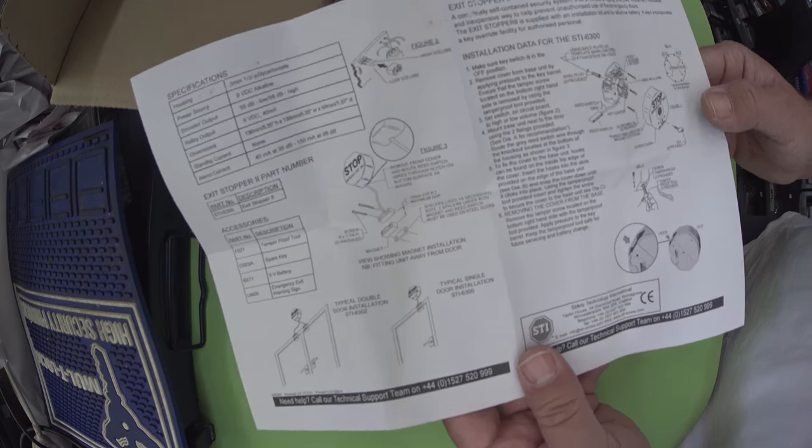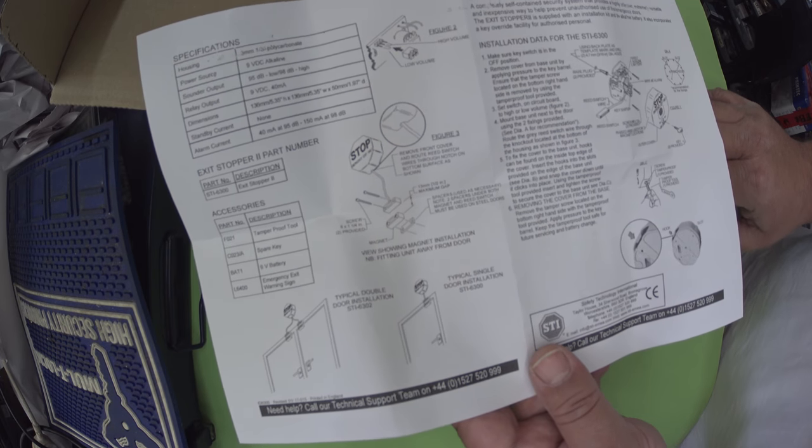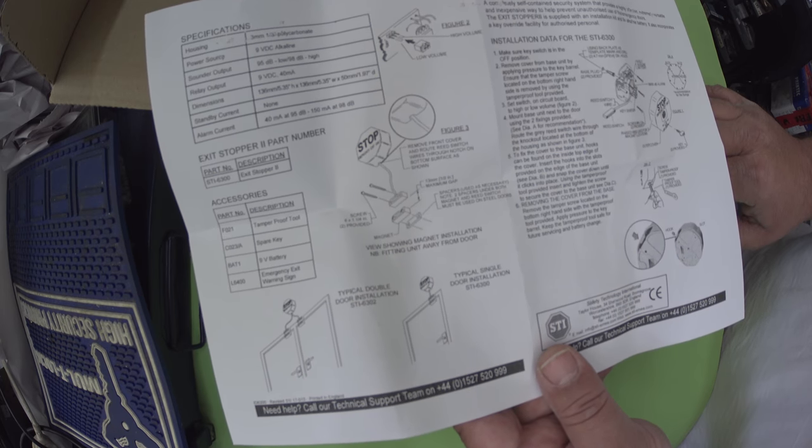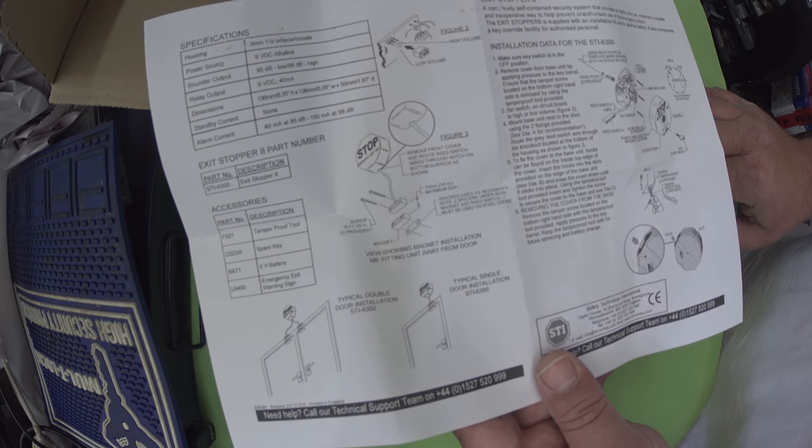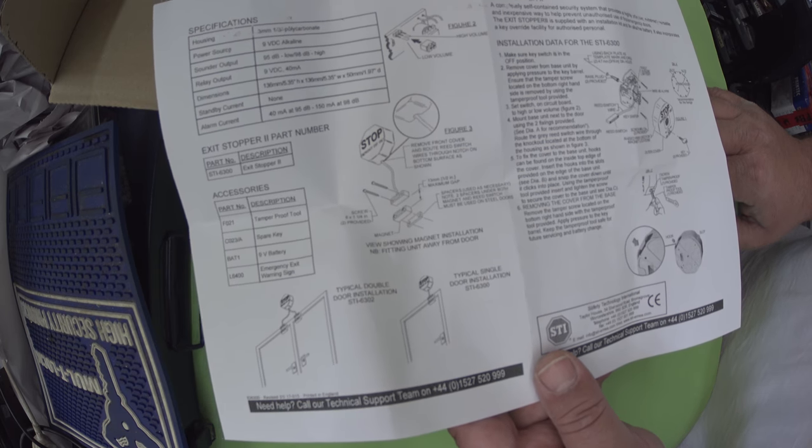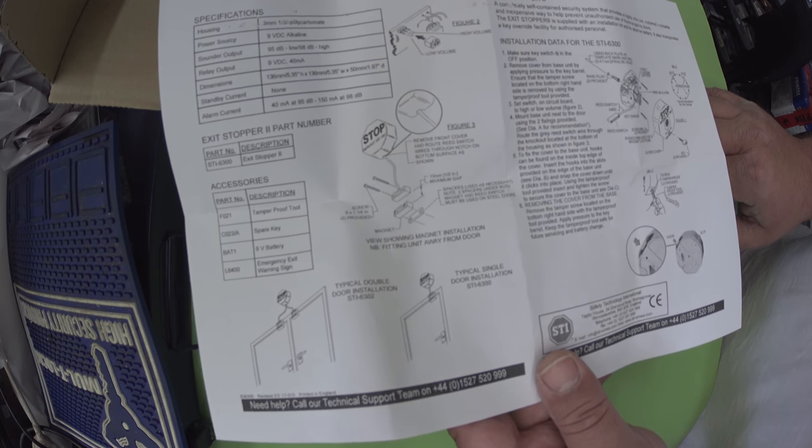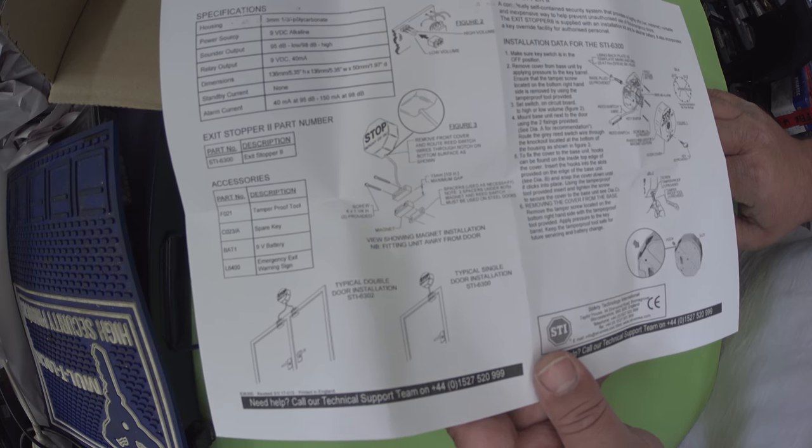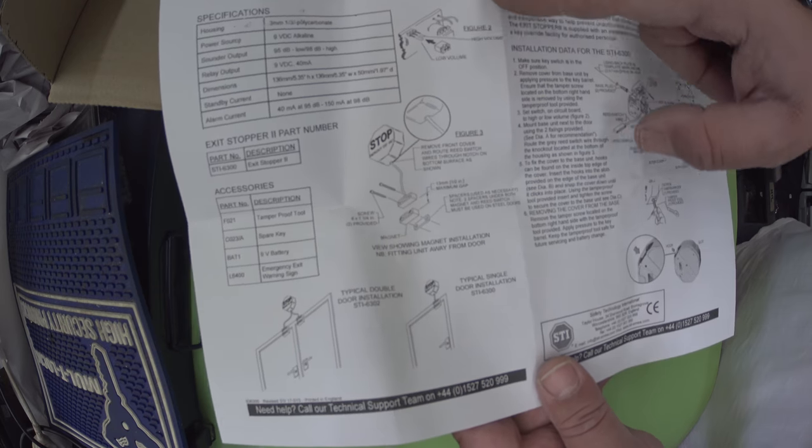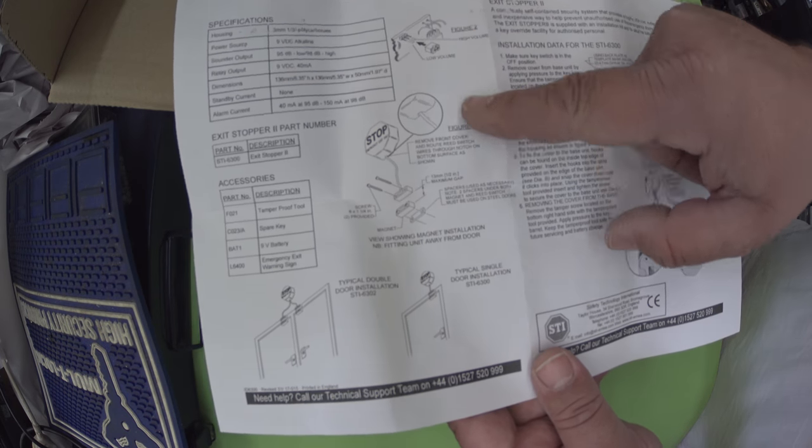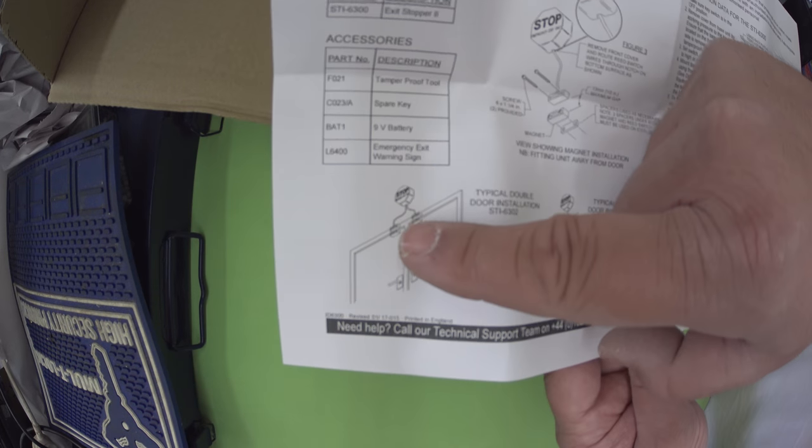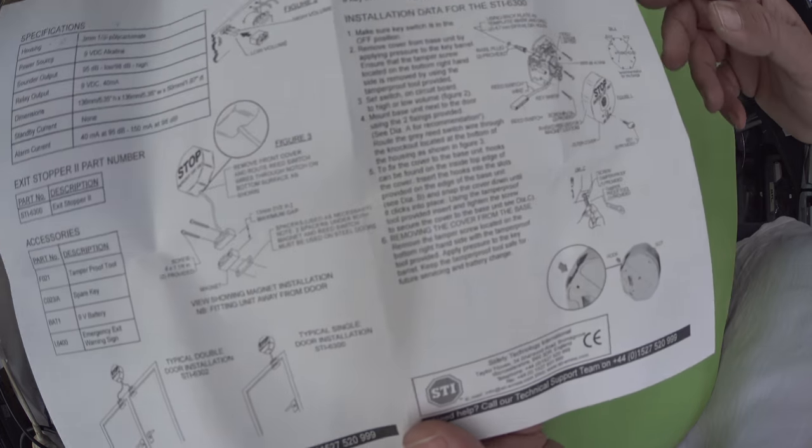So here's our instructions here. Works on a 9 volt DC alkaline battery. That's fairly standard. 95 decibels. So that's fairly loud. Dimensions 136 by 5.35, sorry, 136 or 5.3 inches and about 50 mil high approximately. Shows you how to connect the reed switch. Shows you how it's fitted to the door. Some of them you can use two reed switches. So for double doors and things like that.